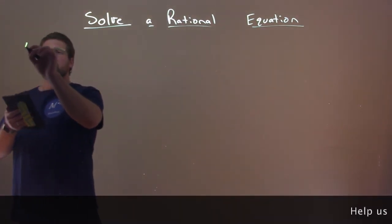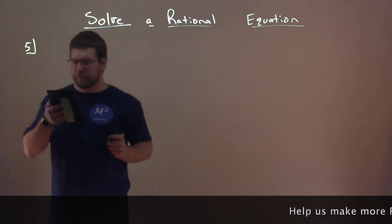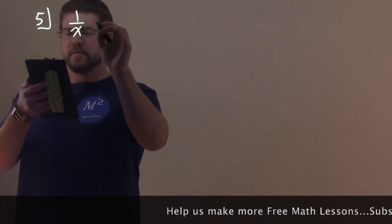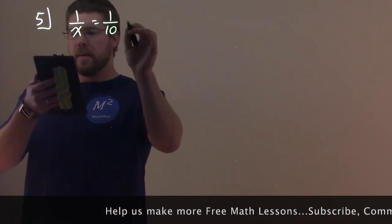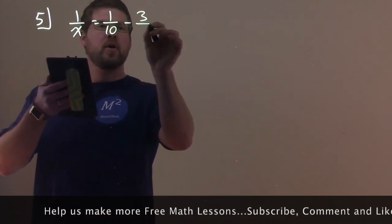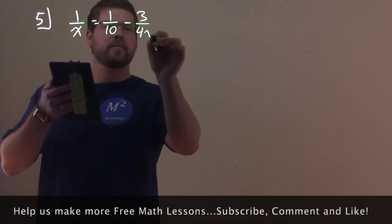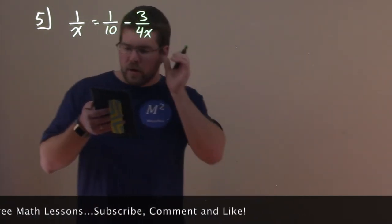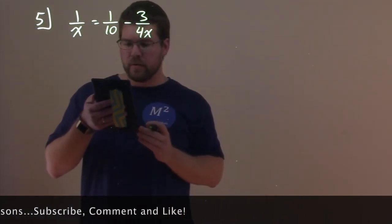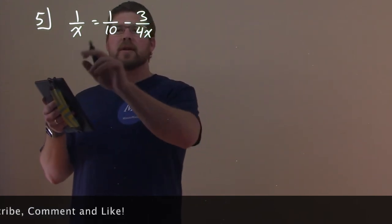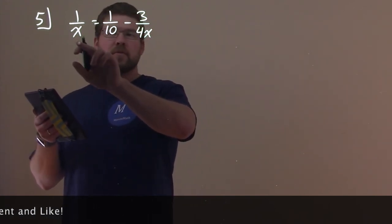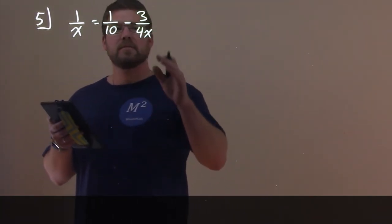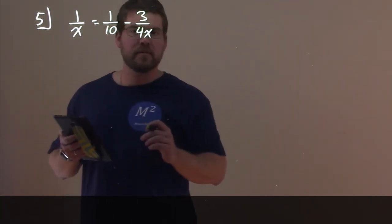Let's try number 5. We have 1 over x equals 1 over 10 minus 3 over 4x. What are the common denominators? We have x, 10, and 4x. 20x contains all of these, so let's multiply both sides by 20x.